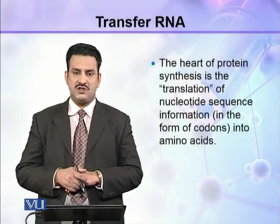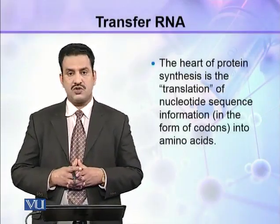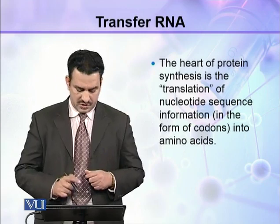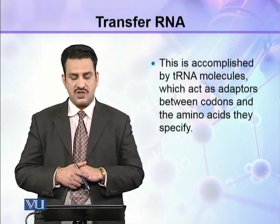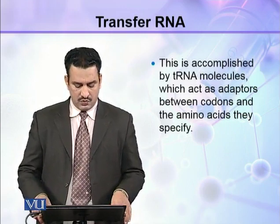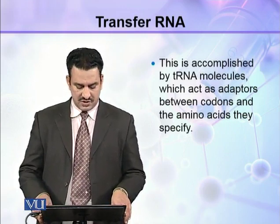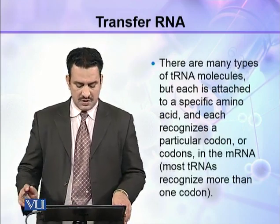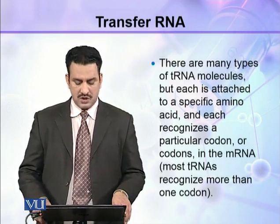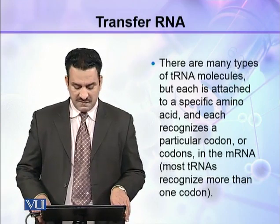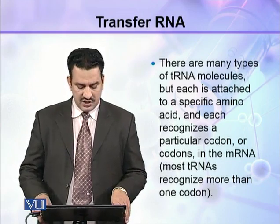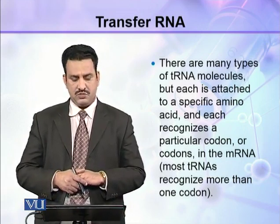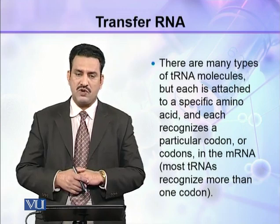The heart of protein synthesis is the translation of nucleotide sequence information in the form of codons into amino acids. This is accomplished by tRNA molecules which act as adapters between codons and the amino acids they specify. There are many types of tRNA molecules, but each is attached to a specified amino acid and each recognizes a particular codon or codons in the mRNA, because most tRNAs recognize more than one codon.